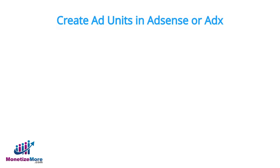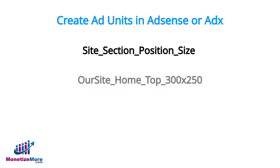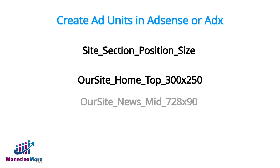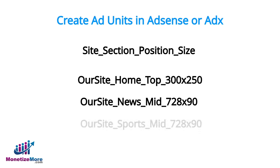So we'll now create some of those ad units. First, let's create our site_home_top_300x250. Then let's create our site_news_mid_728x90. Lastly, let's create our site_sports_mid_728x90.